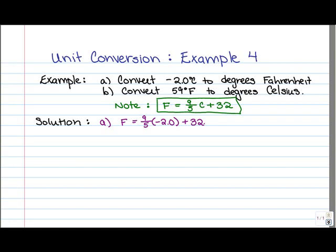Next, let's go ahead and punch this through our calculator. We're going to take negative 2.0, multiply it by 9, divide it by 5, and then once we've done that, we're going to add 32. What we find is that we get an answer of 28.4. So what we got then is that negative 2.0 degrees Celsius is equal to 28.4 degrees Fahrenheit.